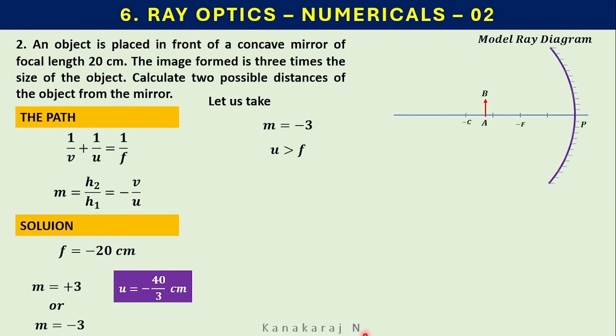Let us have the diagram. AB is the object, the distance u is greater than the focal length. A ray starts, goes through the center of curvature, head of the object meets the mirror, retraces the path.